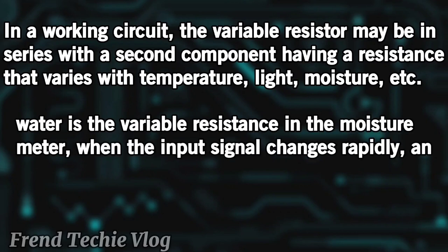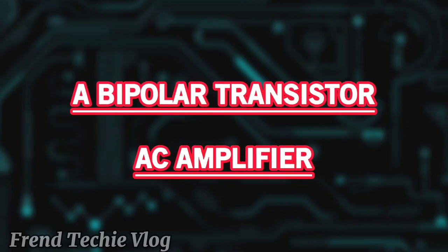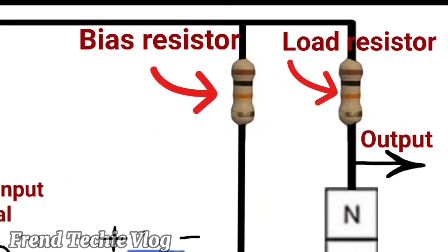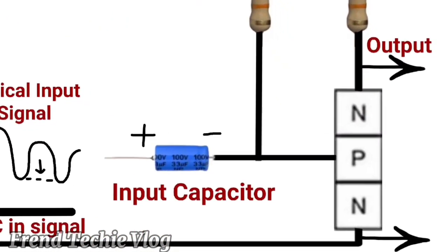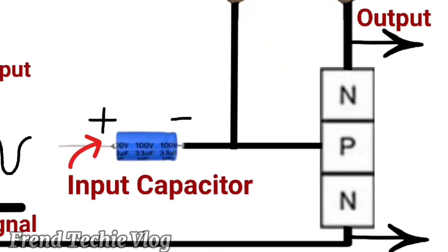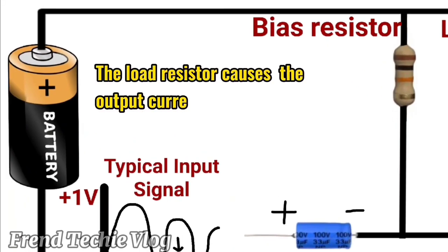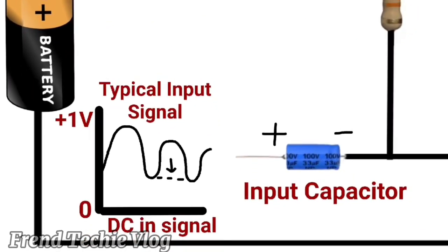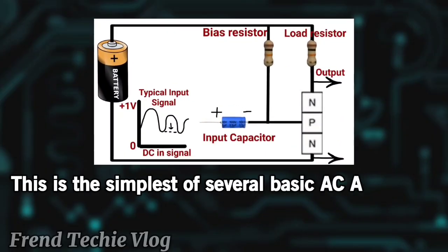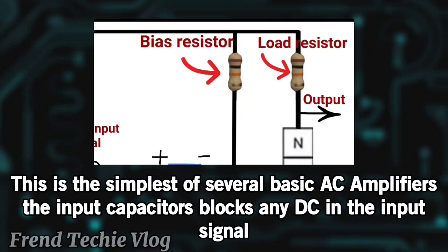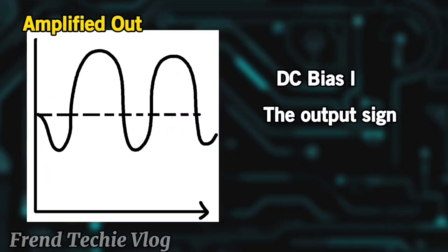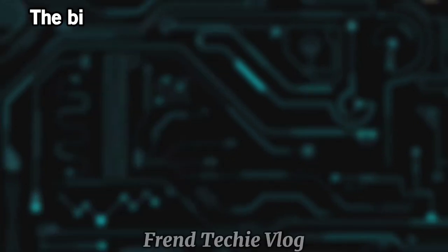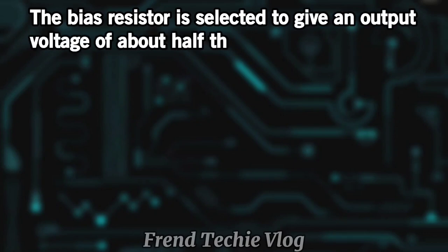When the input signal changes rapidly, an AC amplifier is used. The schematic circuit includes a bias resistor, a load resistor, and an input capacitor. The load resistor causes the output current to become a voltage. This is the simplest of several basic AC amplifiers. The input capacitor blocks any DC in the input signal. The wave represents the AC input signal, and this is the amplified output signal.